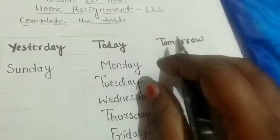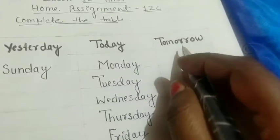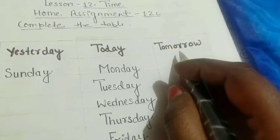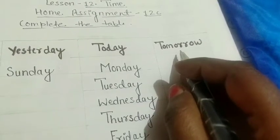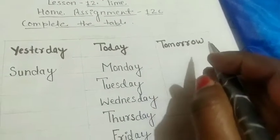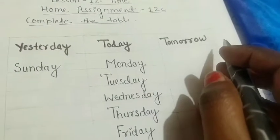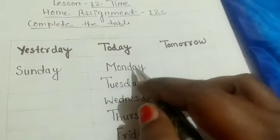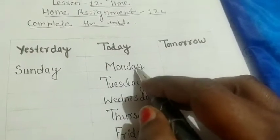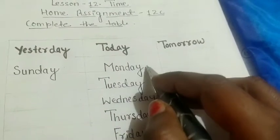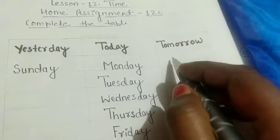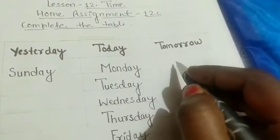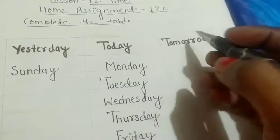The day after today is called tomorrow. Today is Monday, so tomorrow will be Tuesday. We will write it here: Tuesday.